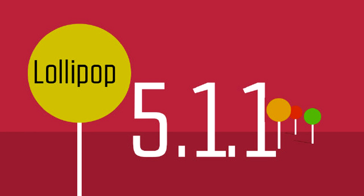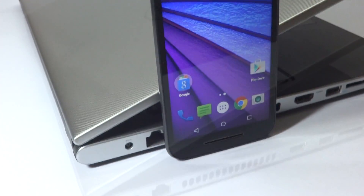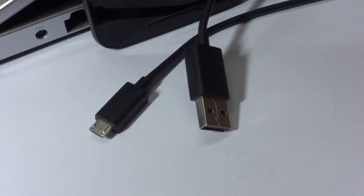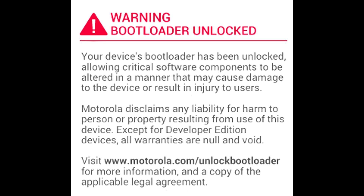CyanogenMod 12.1 runs on Android 5.1.1, and the phone comes out of the box with Android 5.1.1. The things you need to root this phone are: a working Motorola Moto G 2015, a PC or laptop, and a micro USB to USB cable. Remember that rooting any Motorola device will void its warranty. This bootloader unlocking process is applicable to any Motorola device, not just this phone.